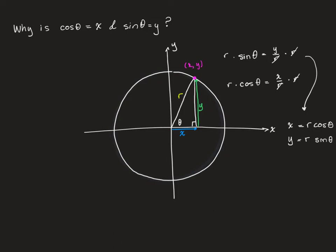But what if r is 1? In other words, what if this is a unit circle? If that's the case, then r here becomes 1, and here, and here.